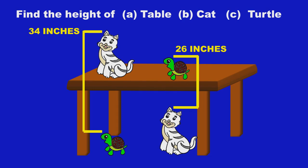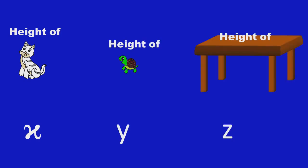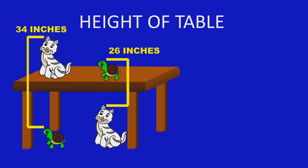Now, the solution is: let the height of the Cat be X, the height of the Turtle be Y, and the height of the Table be Z. From the given data, we have two values: 34 and 26.